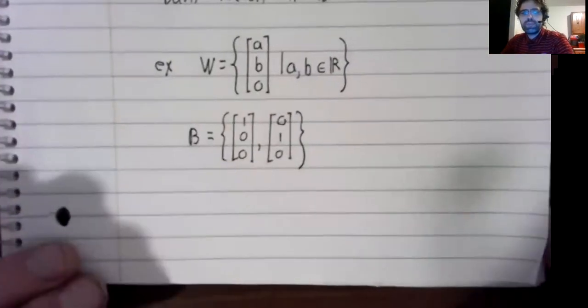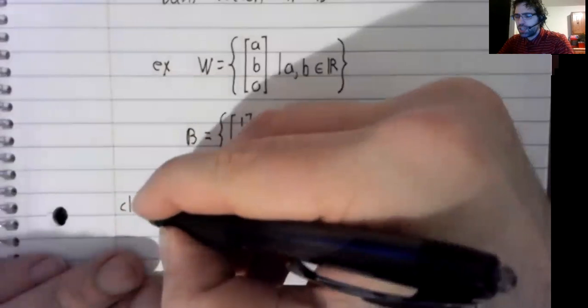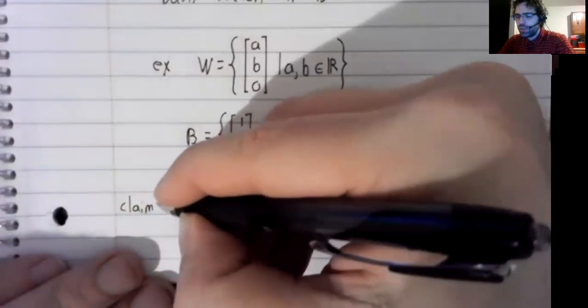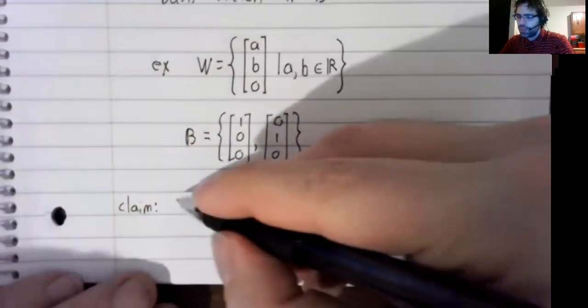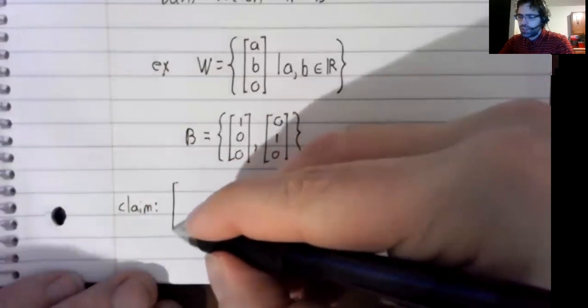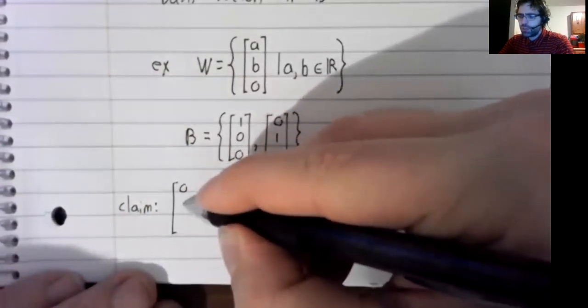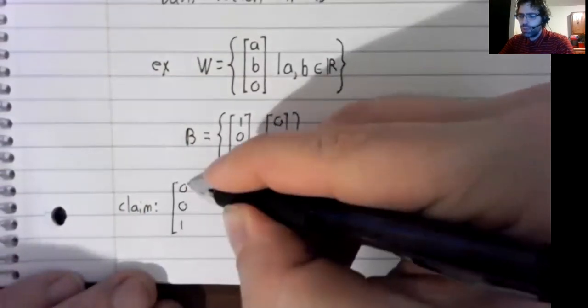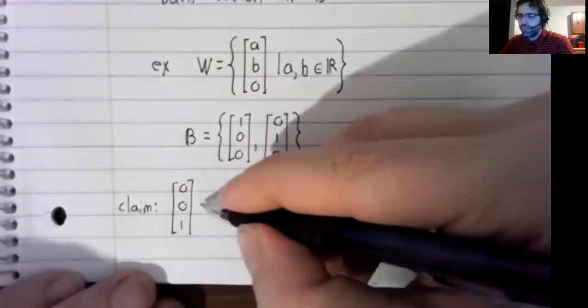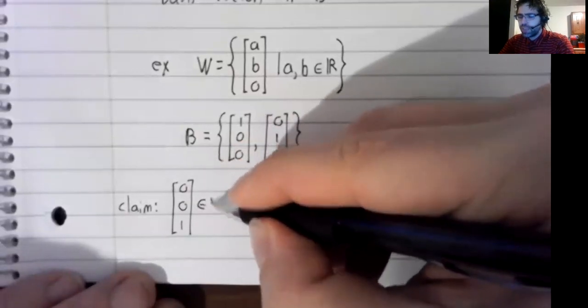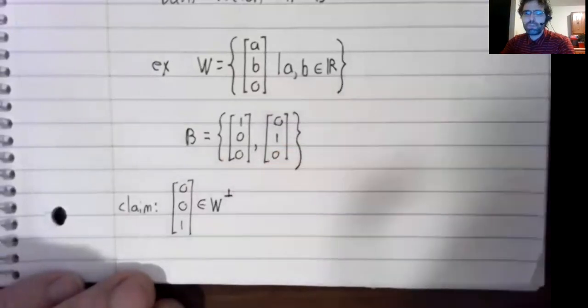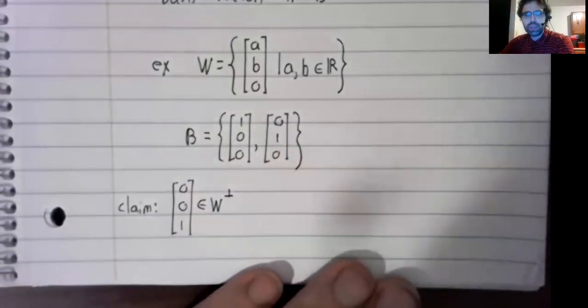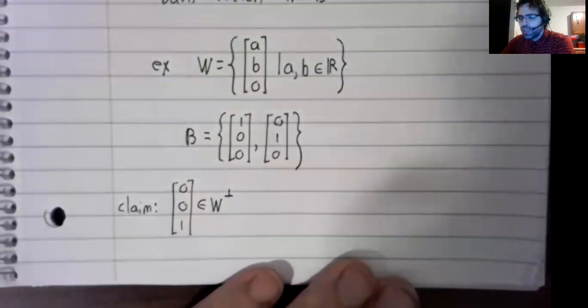And we make the claim that the vector zero, zero, one is in the orthogonal complement of W.